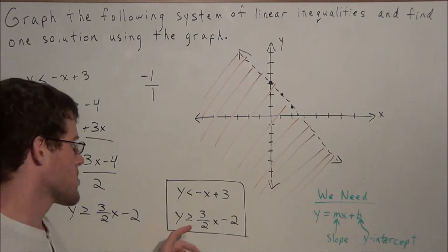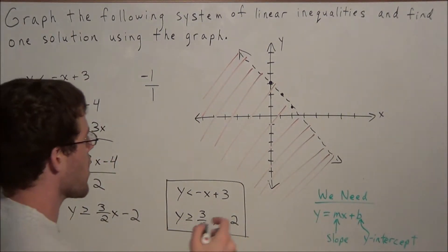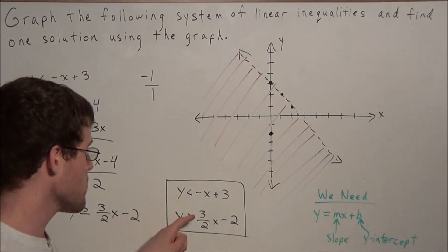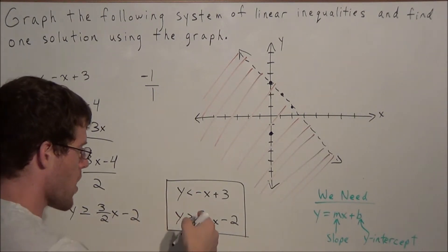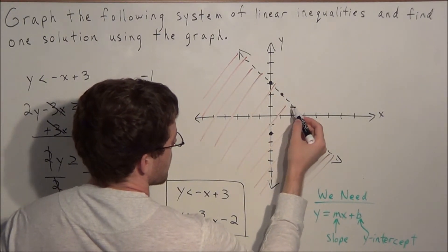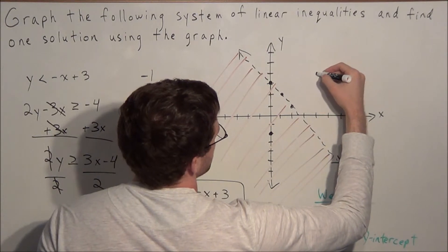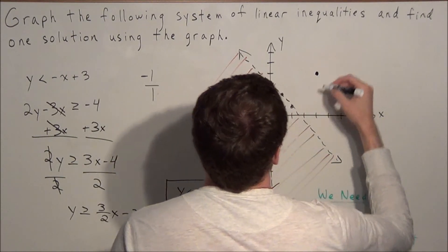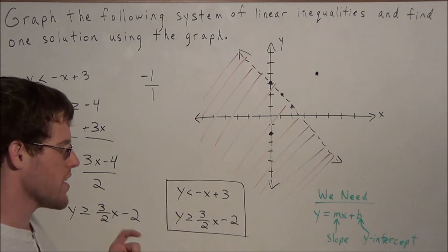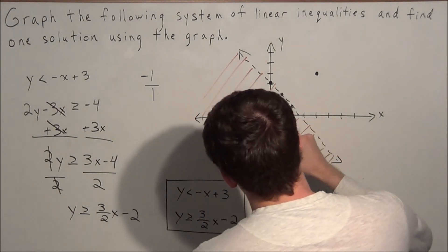Now we graph the second line, y is greater than or equal to 3 over 2x minus 2. This has a y-intercept of negative 2, so we go to the y-axis at negative 2. The slope is 3 over 2, so we rise 3 and run 2 to the next point, then repeat: rise 3 and run 2 again. We connect these three points with a solid line because the inequality is greater than or equal to — that equal to part means we include the points on the line in our solution set.